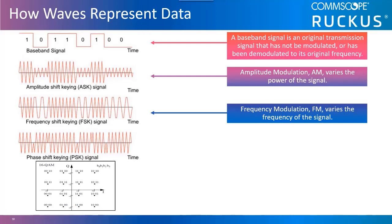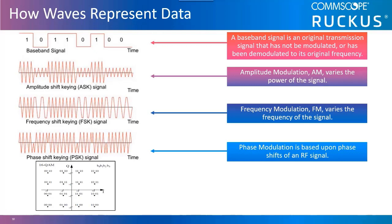This process is referred to as binary phase shift keying, BPSK. Phase modulation is based upon phase shifts of an RF signal and opened the door for quadrature phase shift keying, QPSK. Phase modulation allowed two bits to be derived from each signal state change depending on where in the waveform the state changes.